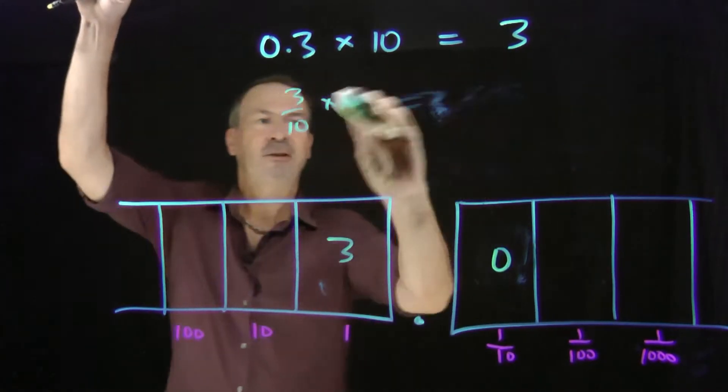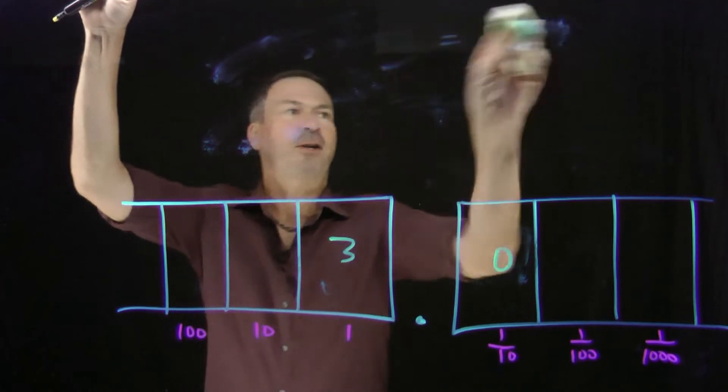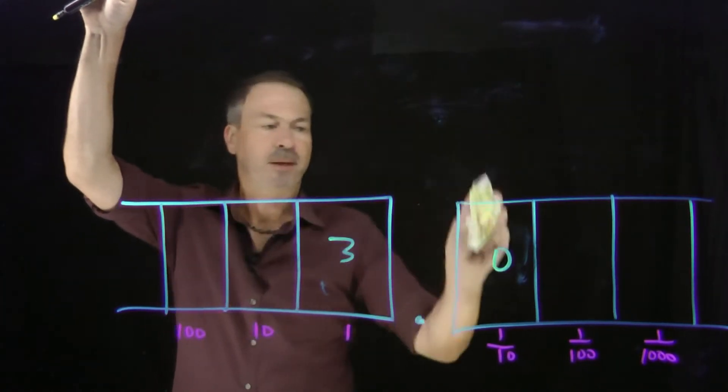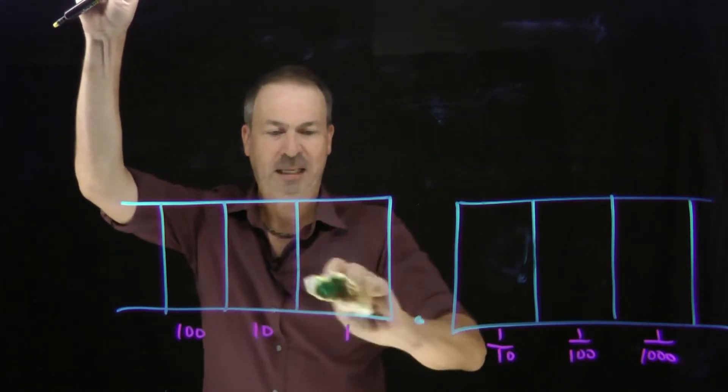Alright, let's do another example. Let's do something like 22.37 times 10. What did I just say? 22.37. 22.37.